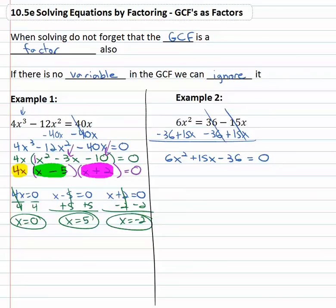First thing we look for when factoring is the greatest common factor. The greatest common factor of 6x², 15x and negative 36 is going to be three.